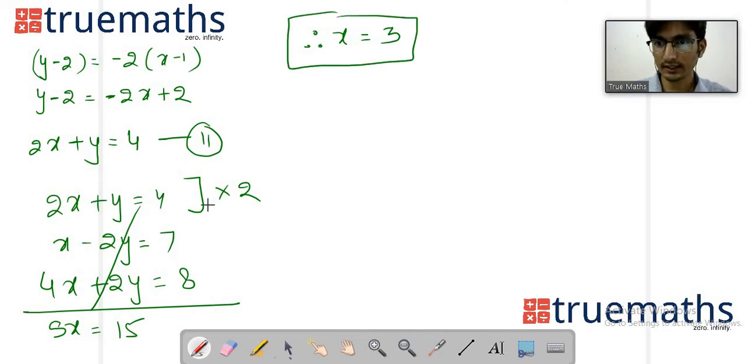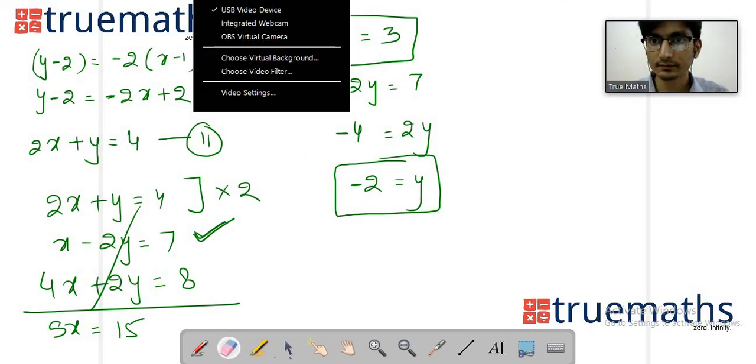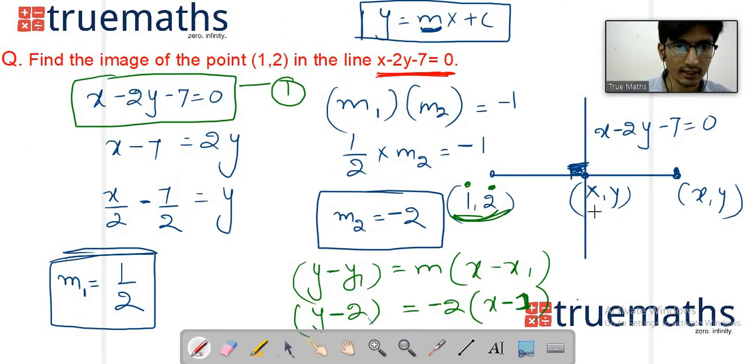Substitute in the equation: 3 minus 2y equals to 7. 2y shifted to positive, 7 is negative, so 3 minus 7 is minus 4. y value, divide by minus 2, gives y = -2. These values are the midpoint - capital X and capital Y. These coordinates (3,-2) are the midpoint.